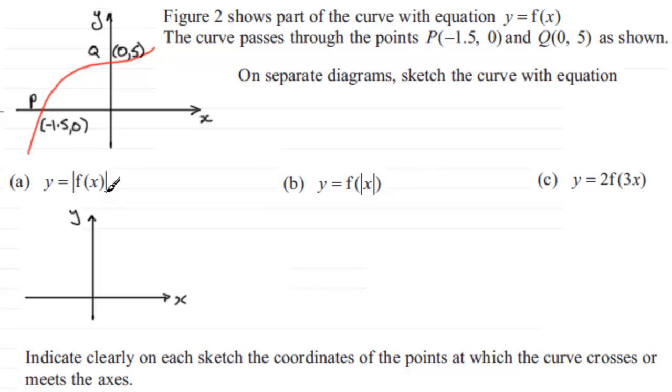What happens when we put a mod sign round the function of X? Well it means that any negative values of f of X become positive. In other words, any of the y values which would normally have been negative, that's this part down here, become positive.